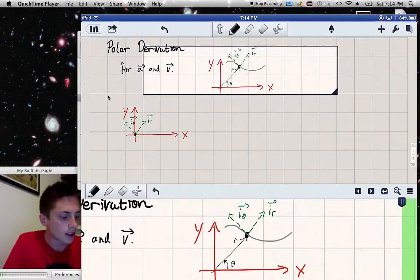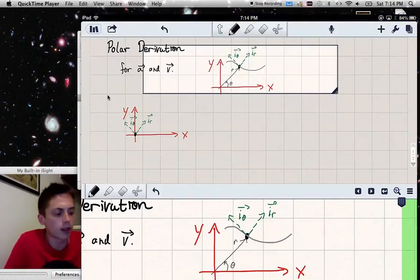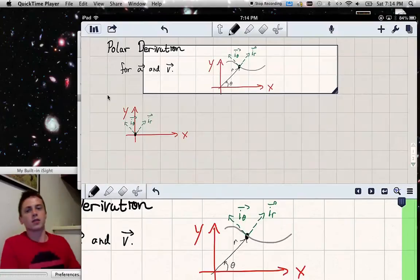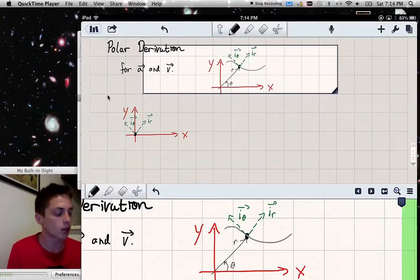We start with a point moving in space, and usually we can just label that point in Cartesian coordinates x and y, but in polar coordinates we use r and theta.